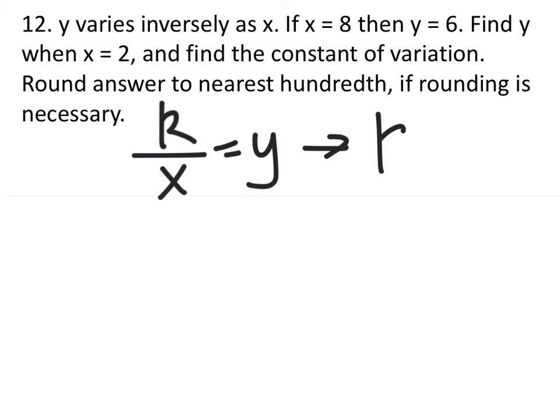So I can also say that my constant is simply Y times X. Because if I multiply these two, then I get my constant there. So what this means is I need to find my constant so that I can take and divide it by 2 to find my Y value.